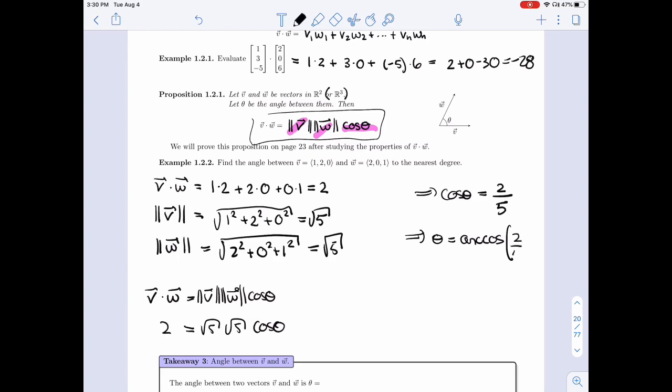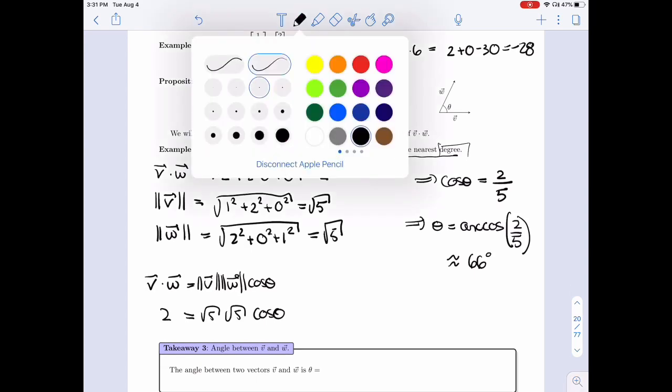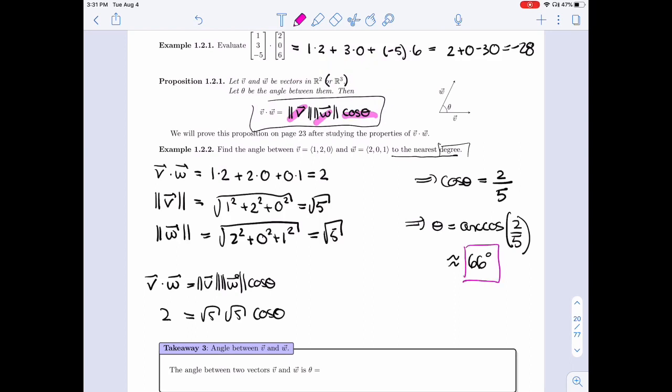I can send the cosine to the other side. I get that arccos of 2 over 5 is theta. Now, this answer is exact, but if you notice, I'm asking for the angle to the nearest degree. So you have to plug this into your calculator. Since it says degree, you need to be in degrees. And you should get something that rounds to 66 degrees. Please try to make sure that you know how to set up your calculator.